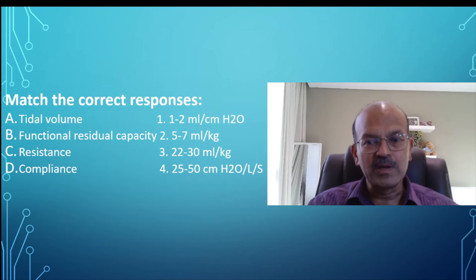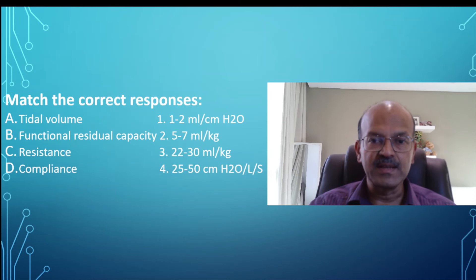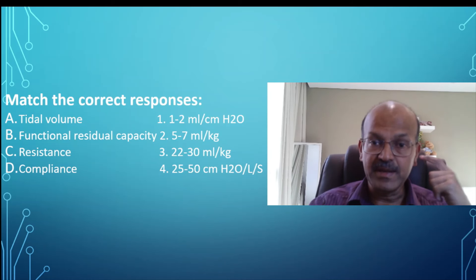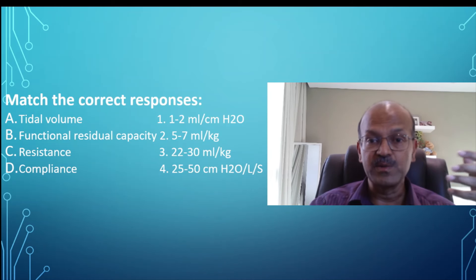Tidal volume is basically the amount of air that goes in and out of the lungs with each regular breathing, and that is 5 to 7 ml per kilogram. Most of you are familiar with this because we said this for volume guarantee ventilation.